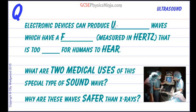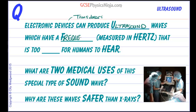Electronic devices can produce ultrasound waves. Sometimes these devices are called transducers, which means they convert electrical energy into sound energy. These ultrasound waves have a frequency — that's the number of waves per second, or number of oscillations per second measured in hertz — that is too high in pitch for humans to hear.